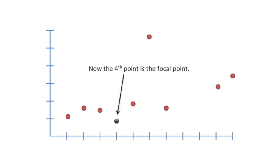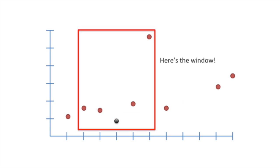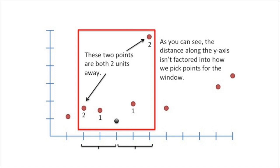Now the fourth point is the focal point. Here's the window. Finally, it's shifted over one. These two points are both one unit away. These two points are both two units away. As you can see, the distance along the y-axis isn't factored into how we pick points for the window. At this stage, we're only interested in distances along the x-axis.